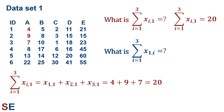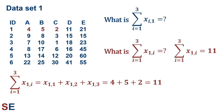The summation from i=1 to 3 of x_{i,1} is x_{1,1} plus x_{2,1} plus x_{3,1}. The letter i is changing from 1 to 3. We find those values in the data table: that's 4, 9, and 7, so 4 plus 9 plus 7 equals 20. For our second summation, i going from 1 to 3 of x_{1,i}, the second subscript changes, giving us x_{1,1} plus x_{1,2} plus x_{1,3}. Those values are all in the first row, columns 1, 2, and 3: 4 plus 5 plus 2 equals 11.